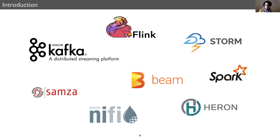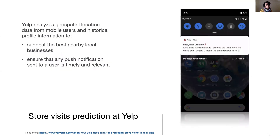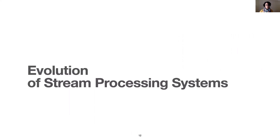Here are a few applications I'd like to mention. Alibaba CityBrain uses streaming technology for traffic light adjustment in real time — to clear paths for emergency vehicles and provide scheduling information for public transport. Yelp uses streaming technology to analyze user locations and provide them with real-time recommendations with push notifications. Even more impressively, stream processing is used for mission-critical applications. NASA's Deep Space Network relies on Apache Kafka to provide monitoring support to dozens of deep space missions.